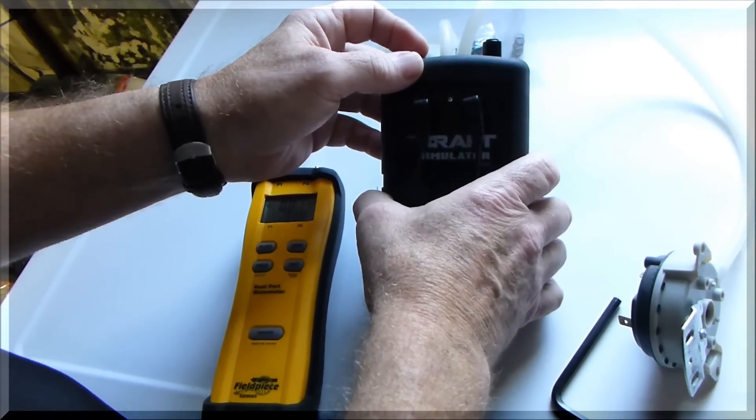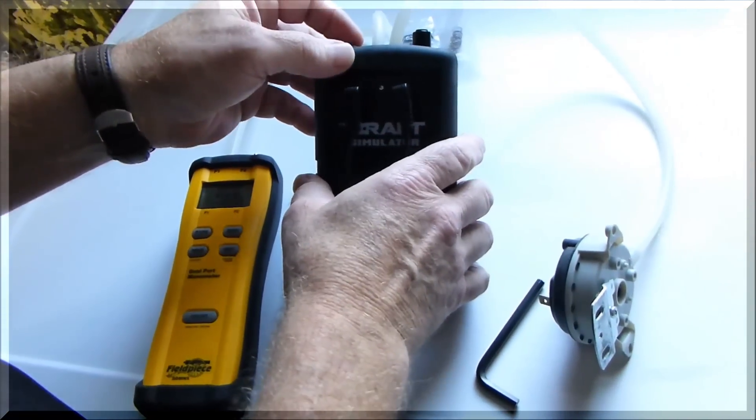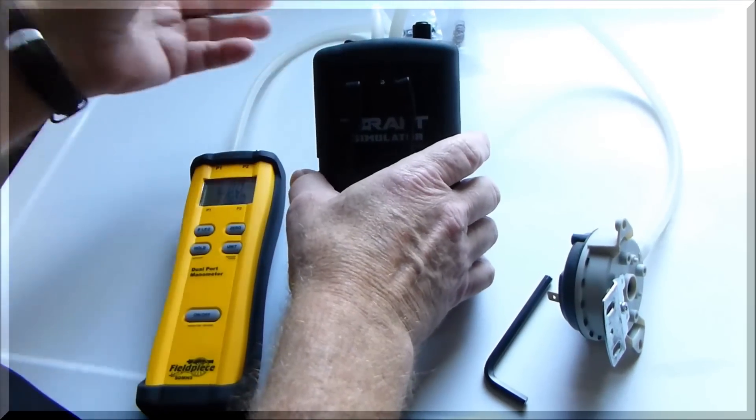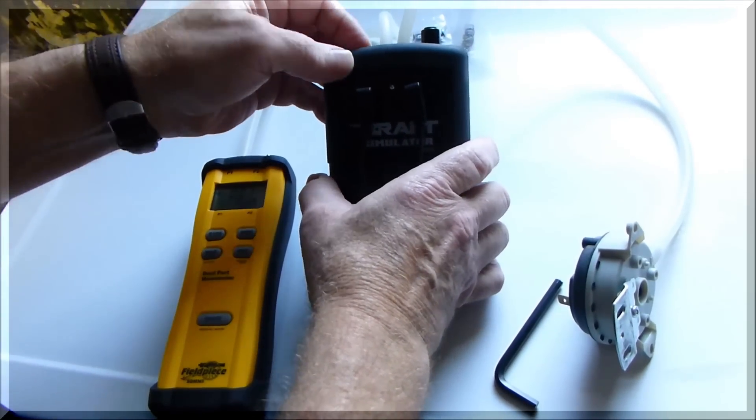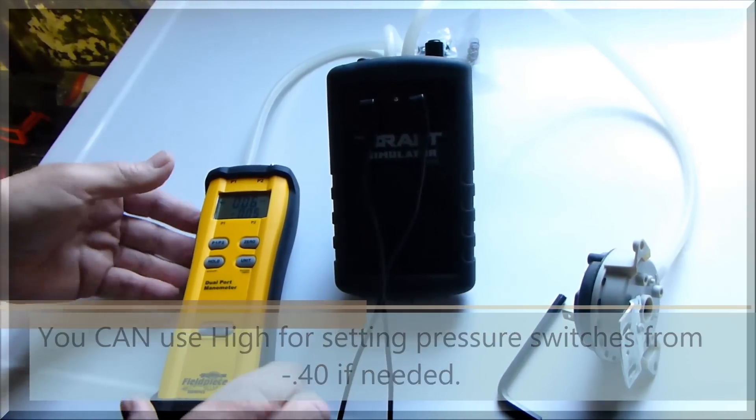we're going to turn this on and make sure that we want to do this in low speed, because anything under inch and a half water column we want in low. So that's high, we're going to go to low.